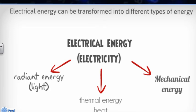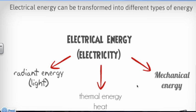Electrical energy, basically electricity, can be transformed into many different types of energy: converted into radiant energy, which is light, thermal energy, which is heat,